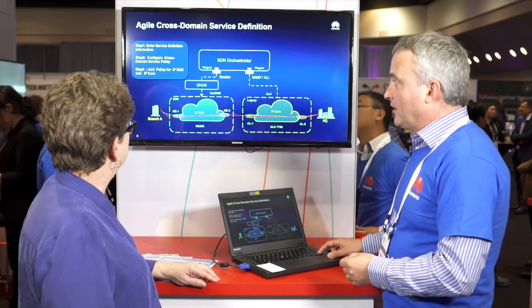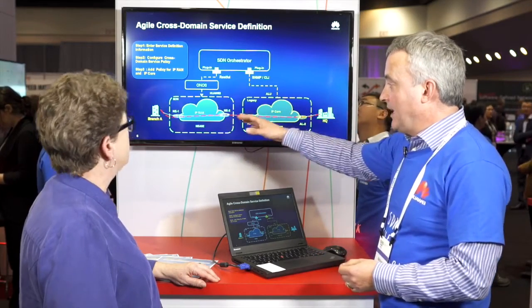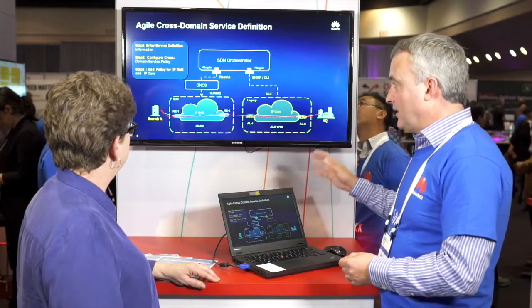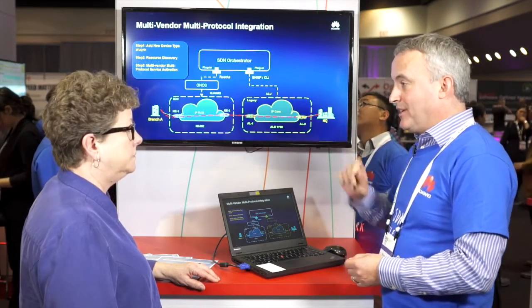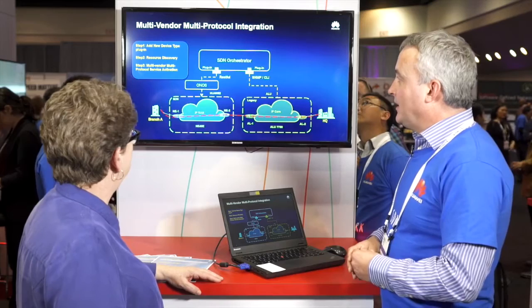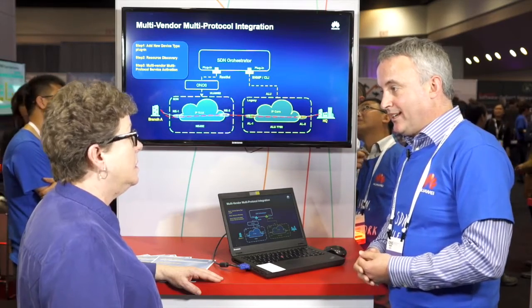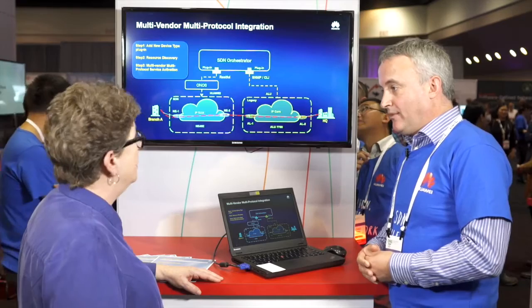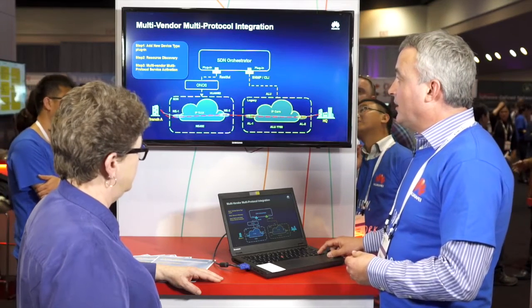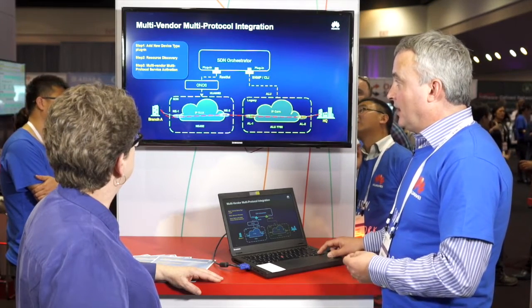We're going to enter a service definition, configure cross-domain service policies showing how we build up the end-to-end service definition, and add policies for the IP-RAN and IP core. The whole idea is to get to a point where we can press one button and the service comes up. We'll also show how to add a new device type and do some resource discovery — very important because equipment and controllers evolve quite quickly. Then we'll look at the multi-vendor, multi-protocol service activation.